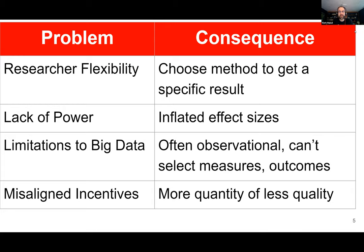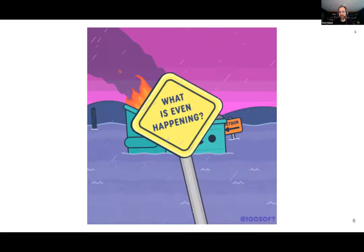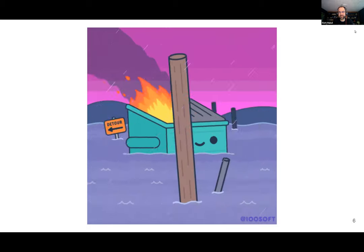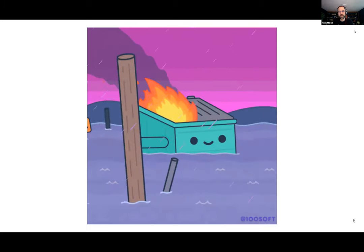There are also problematic publications — retractions are on the rise in academic research. If you're interested, I highly recommend the Retraction Watch blog. Education may have a lot of big administrative data, but that's often observational and we don't control what information is collected, limiting what questions we can answer. There are also issues with researcher flexibility, lack of statistical power, and incentives that favor quantity over quality.